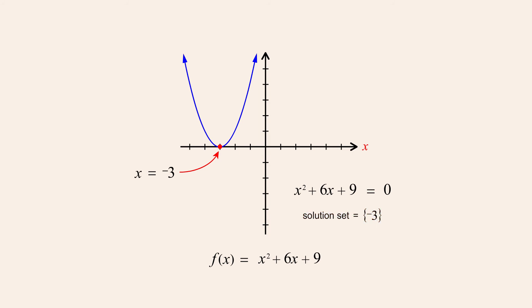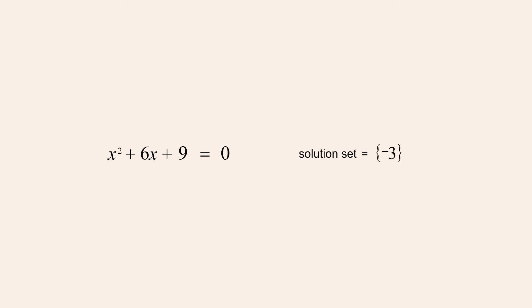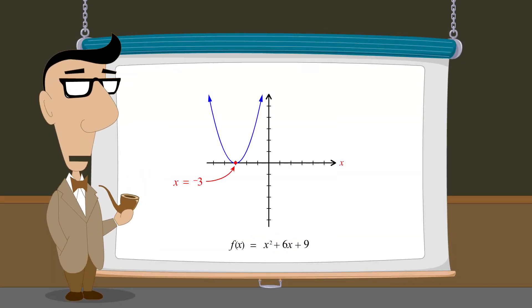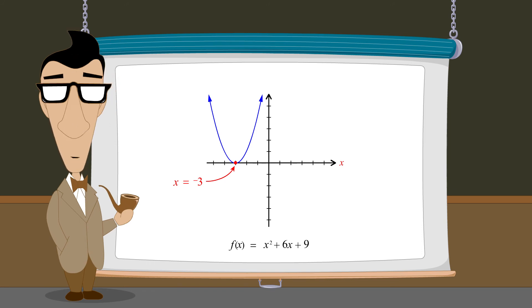If we wish to check our results, we can substitute this value for x into the quadratic equation to see if it produces a true statement. Substituting negative three for x gives us negative 3-squared in the first term, which is nine, and 6 times negative three is negative eighteen. Since nine minus eighteen plus nine is zero, negative three is indeed a solution to this quadratic equation. It is an interesting fact that perfect square quadratic functions always have a single root, since their factors are always two identical linear functions with identical x-intercepts.